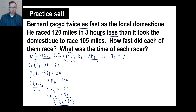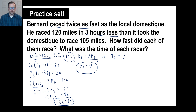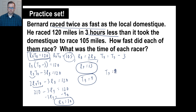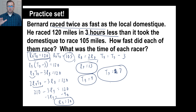If Bernard is going 30 miles an hour, he's going twice as fast as the domestique, so the domestique is going 15 miles an hour. Bernard goes 120 miles at 30 miles an hour, so his time is four hours. His time equals the domestique's time minus three, so four equals seven minus three — the domestique's time is seven. Just remember: work out the four equations, start substituting, and it'll come together. See you guys next time.